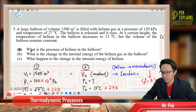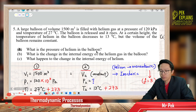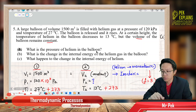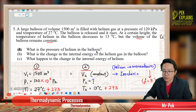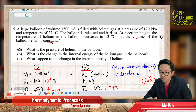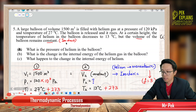First of all, what is the pressure of helium in the balloon? The most important statement here is that the volume is constant — this is the thing you should first look out for. Volume is constant means this is an isochoric process. Volume is constant, no expansion, no compression, zero work done. Isochoric process — constant volume.